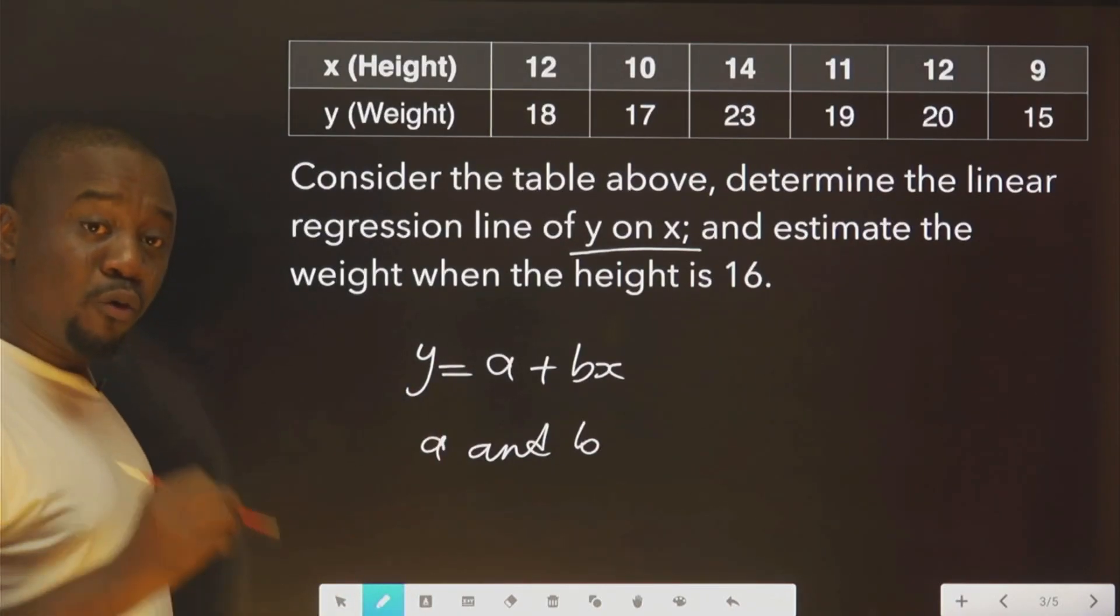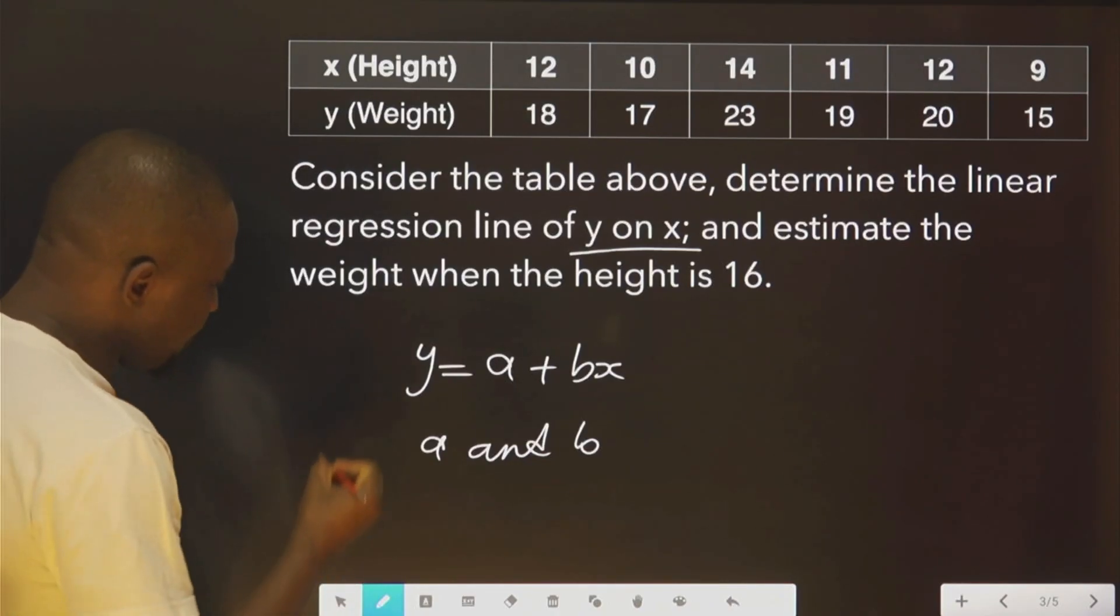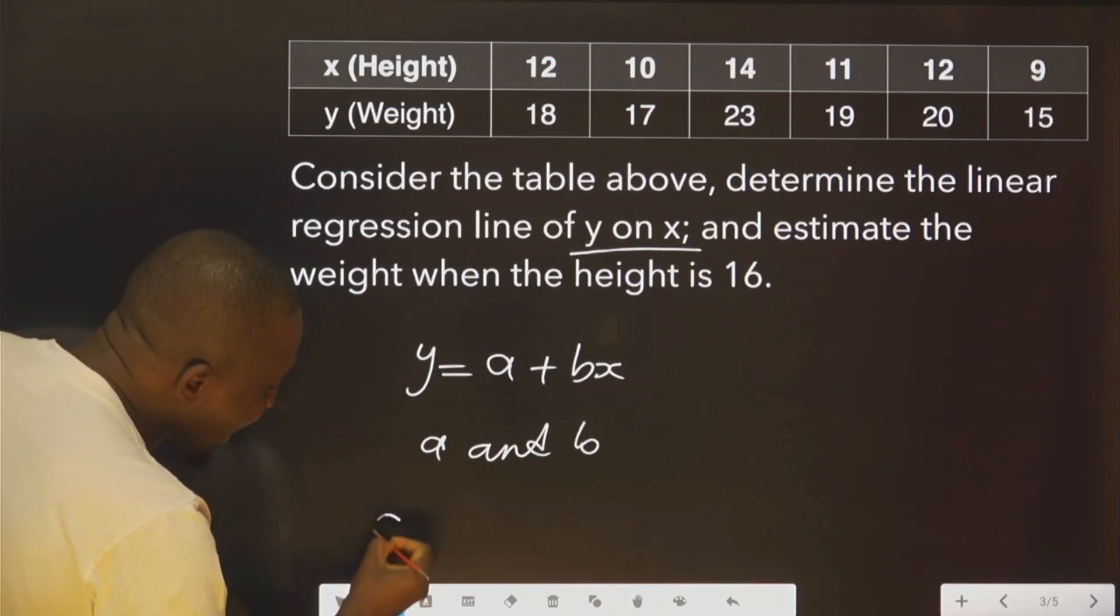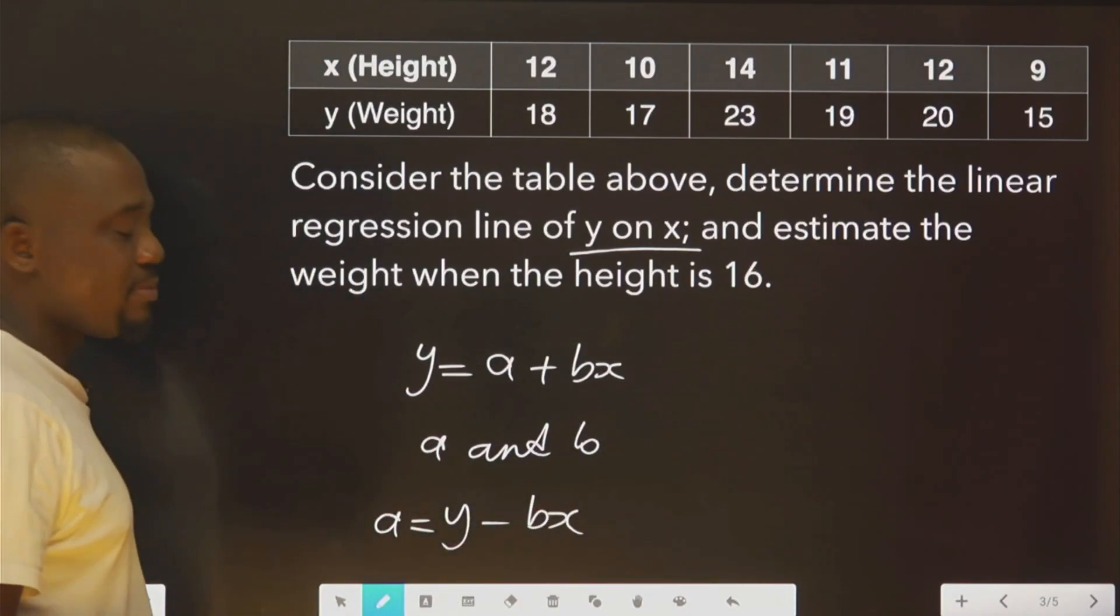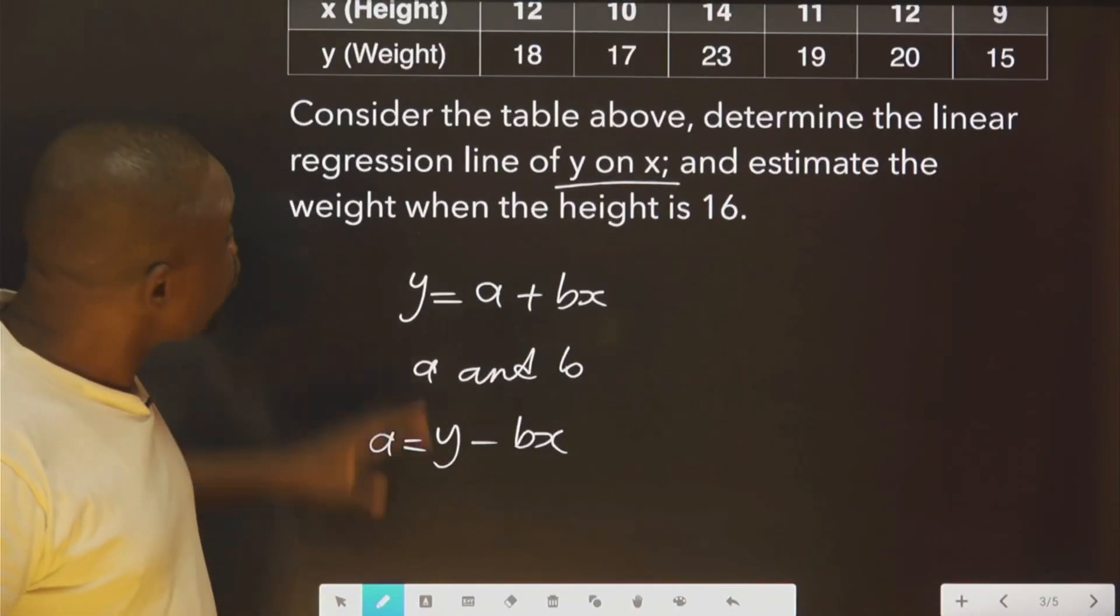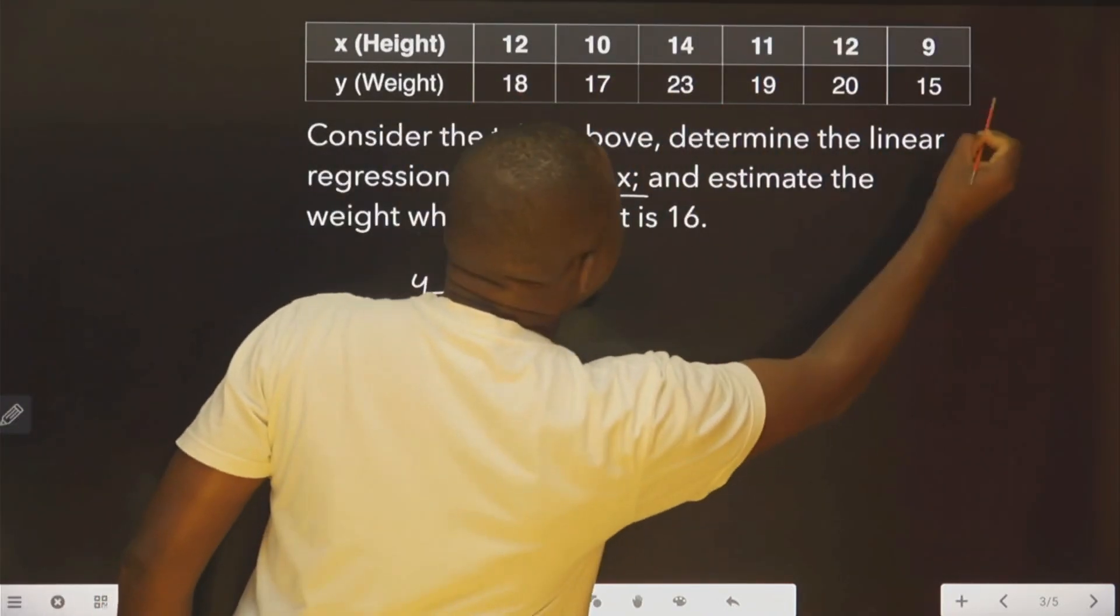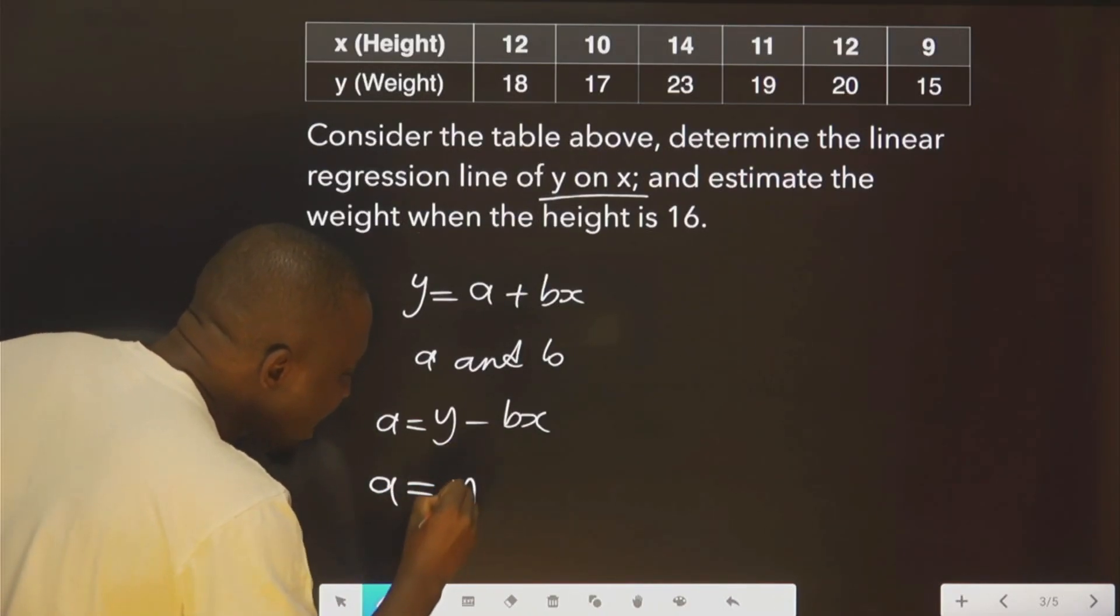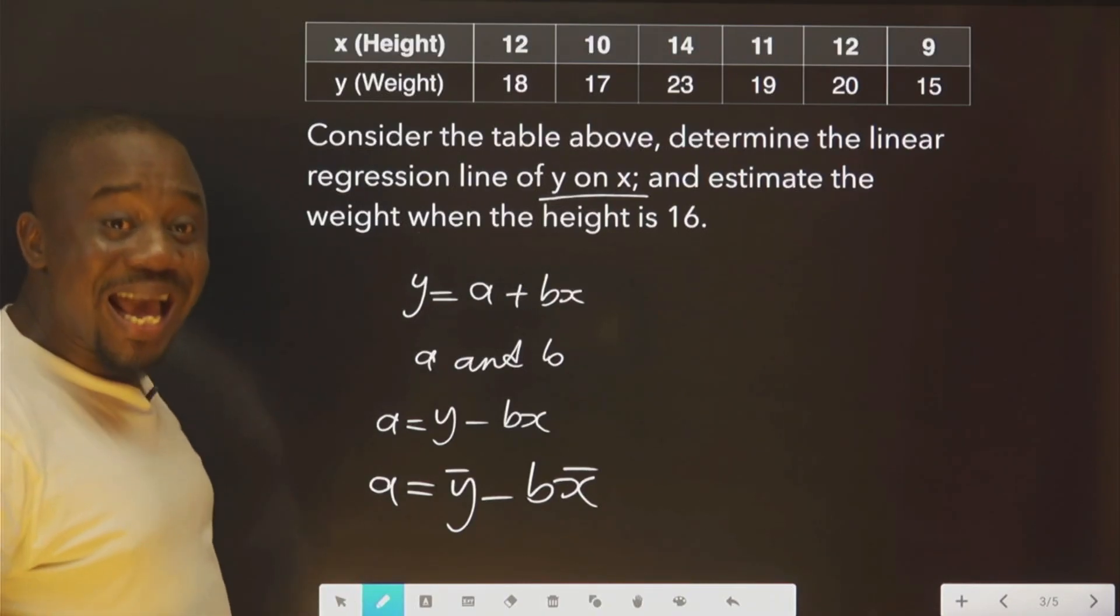How do we find a? To find a, you use this formula. From here you get a. That is, to get a now, a becomes equal to y minus bx. This is y, we're talking about the mean of this. The mean. That is to say, the mean of y minus b, the mean of x. That is, you add everything, divide by 1, 2, 3, 4, 5, 6. That is mean.